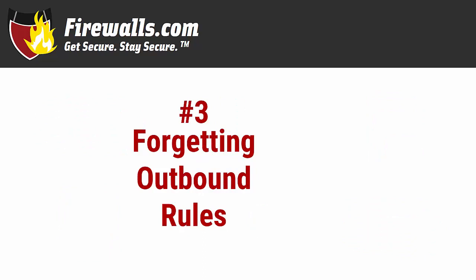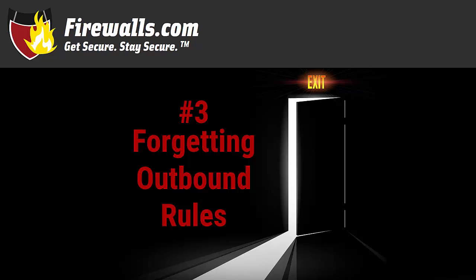Number three: forgetting about outbound rules. The first thing people think about when they hear the word firewall is blocking external traffic from entering a network, so they tend to focus on inbound traffic policies. However, security policies for traffic headed out can be just as important. Default settings can be overly permissive, leaving your users and hosts vulnerable to malware that pulls data from your network to an external location. A lack of outbound policy configuration can also expose networks to IP spoofing attacks, and your organization could be held liable for any illegal data cached on your network.